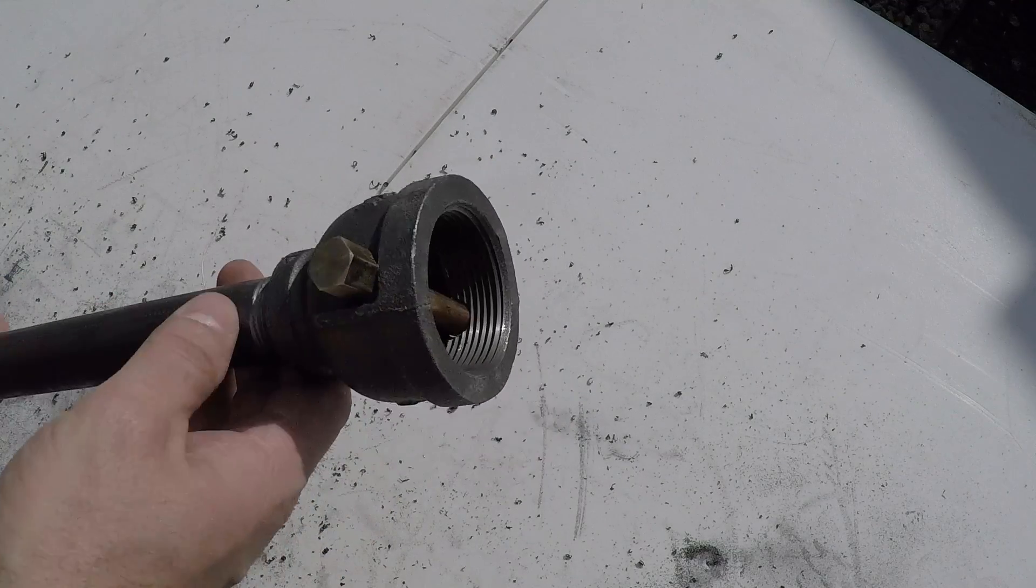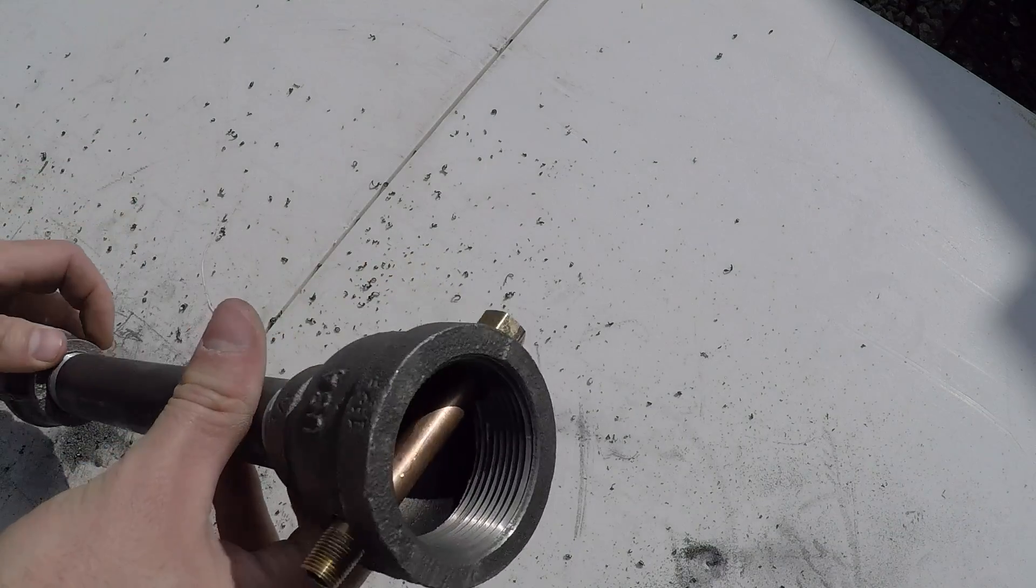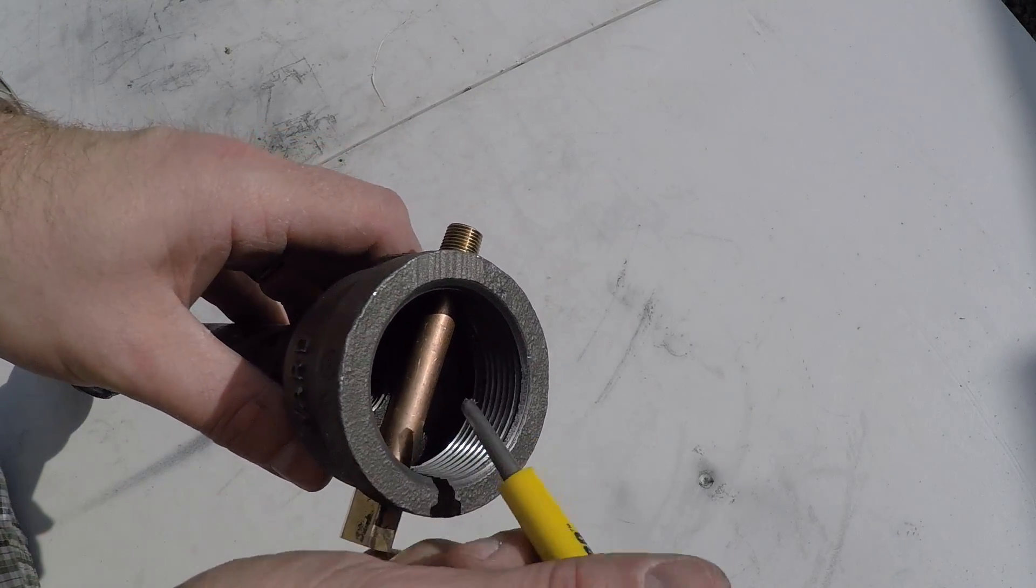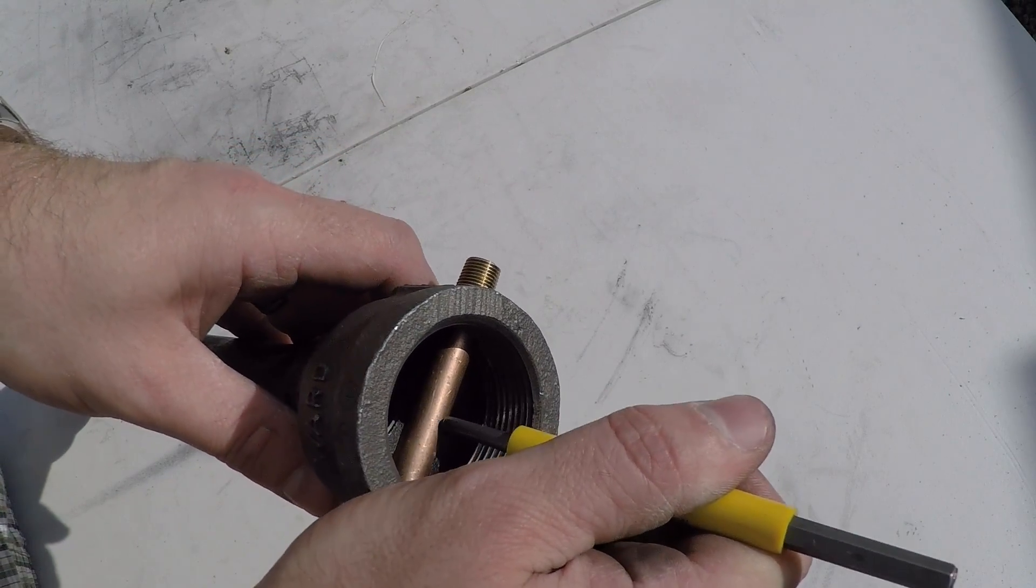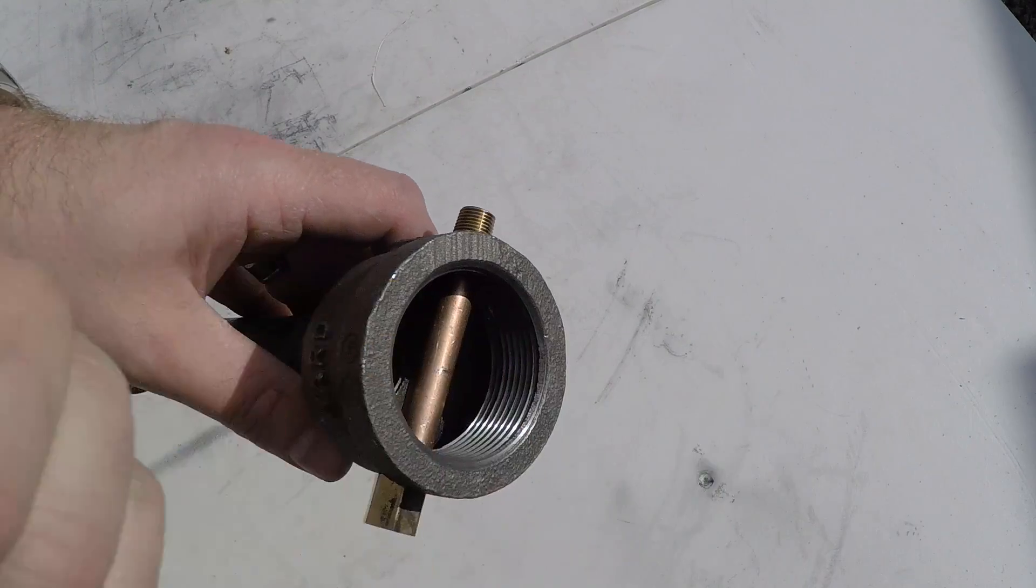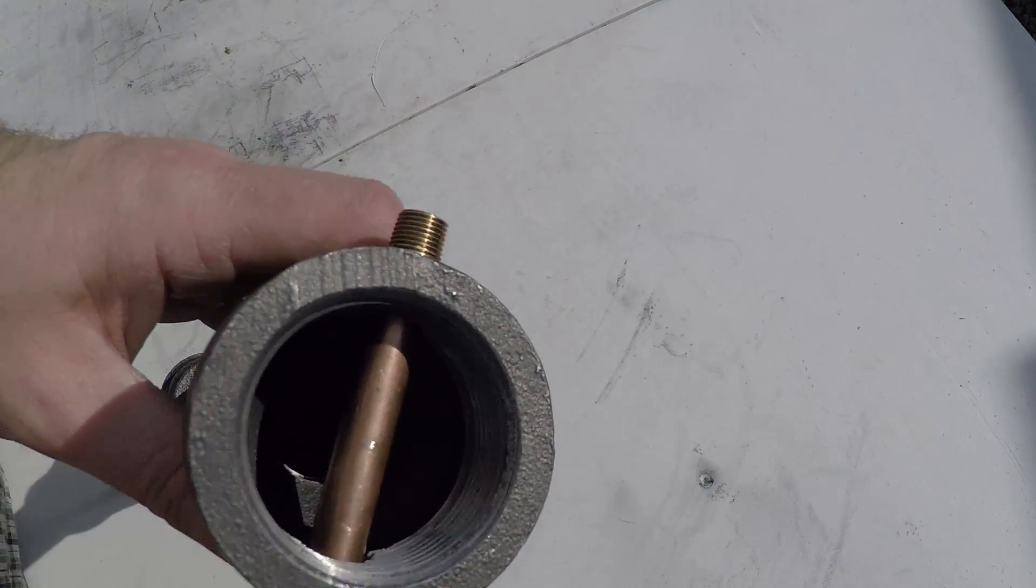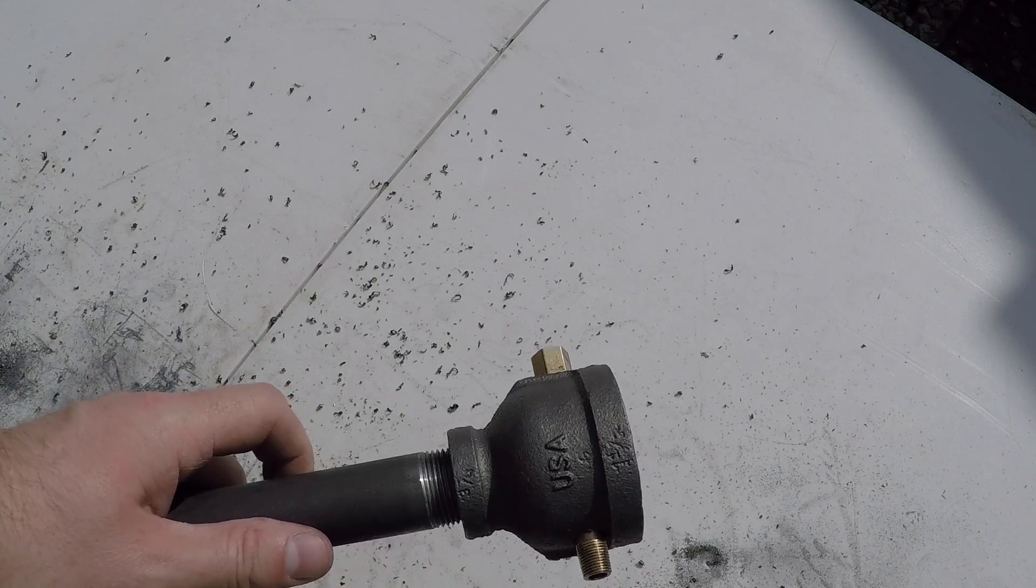Now that you have the hole drilled all the way through, you can test fit the gas pipe. While you have the pipe in here, you want to make a note of approximately where the center is. You can just scratch a line. Once you've checked the fitting, you can remove it.